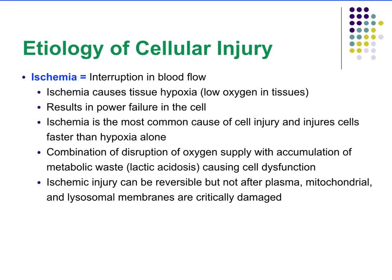Not only does ischemia stop delivering good things to tissues, but it also prevents removal of metabolic waste. The buildup of waste like lactic acid contributes to cellular dysfunction, which is why ischemic injury is more severe than hypoxia alone. Ischemic injury can be reversible if caught and remedied early, but once there is significant damage to the plasma membrane, mitochondria, or lysosomal membranes, it is no longer reversible.